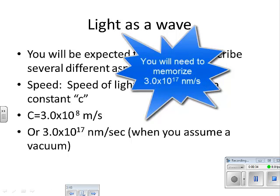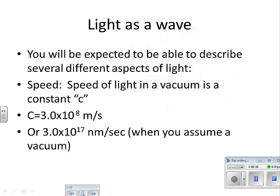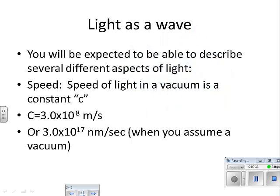And then both of these numbers are worth memorizing. C can equal 3.0 times 10 to the eighth meters per second. That's going to be a number that's going to be on your star chart, so you don't necessarily have to memorize that.